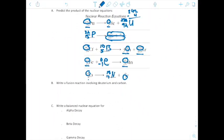It says write a fusion reaction involving deuterium and carbon. So deuterium is hydrogen with two, with a proton and one neutron, so mass number of two. And then we'll have carbon. So carbon-12, and carbon has six protons. And then it's a fusion reaction, so they're going to combine to make 14. Two plus 12 is 14, one plus six is seven, and then nitrogen.